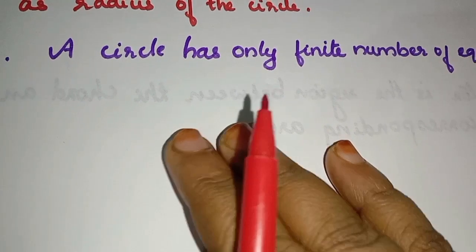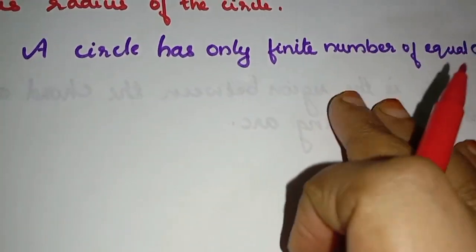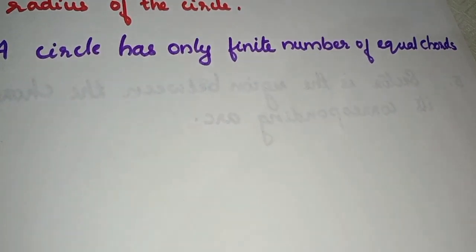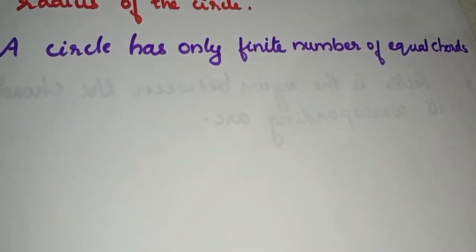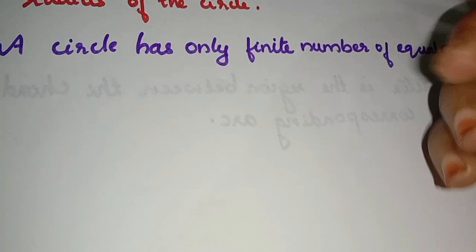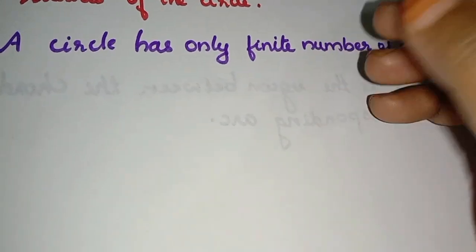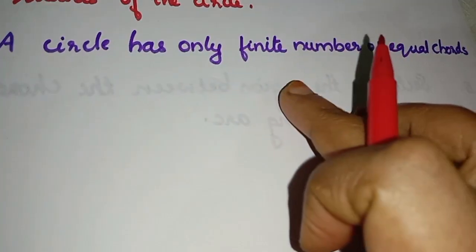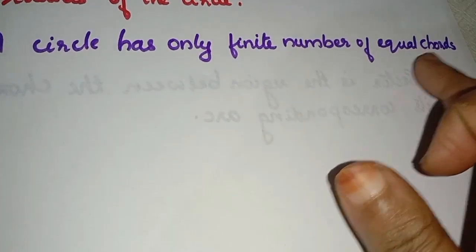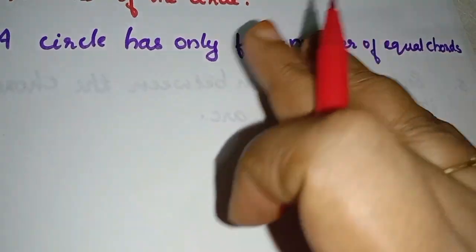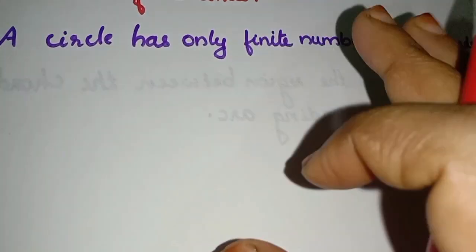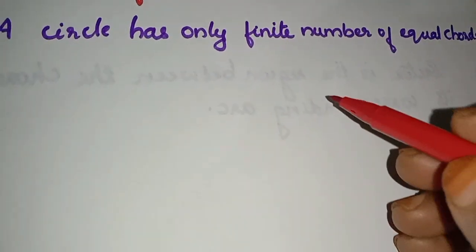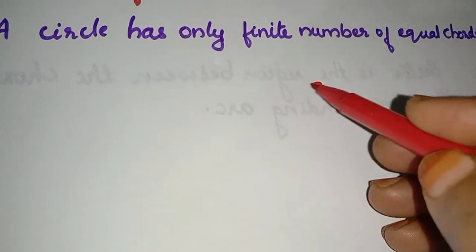Second question: A circle has only a finite number of equal chords. Finite number means countable. That is what we call equal chords of a circle.